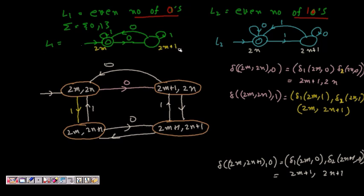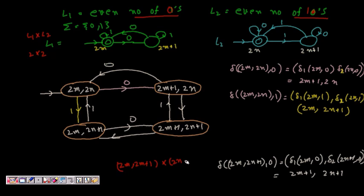The cross product for L1 cross L2 gives us a 2x2 = 4 states total: (2m, 2n), (2m, 2n+1), (2m+1, 2n), and (2m+1, 2n+1). These four states represent all combinations of even/odd counts of zeros and ones.